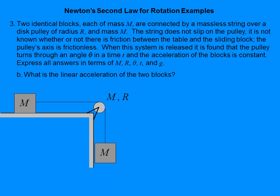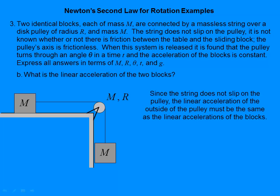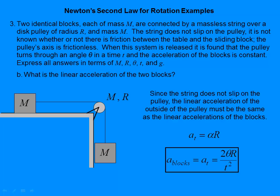Part B: what is the linear acceleration of the two blocks? The string does not slip on the pulley, meaning the outside of the pulley moves the same as the string, which moves the same as the blocks. Therefore, the linear acceleration of the blocks equals the tangential acceleration of the outside of the pulley, which is α·r. Plugging in alpha, we get a = 2θr/t².